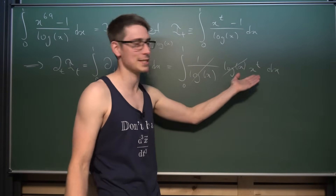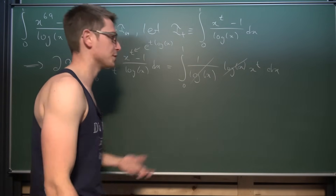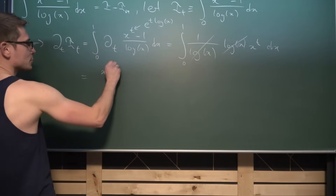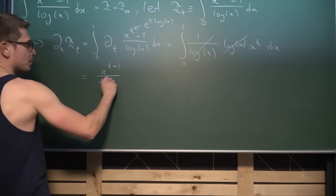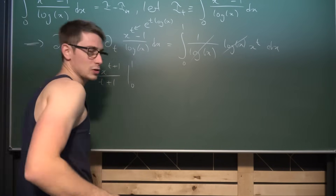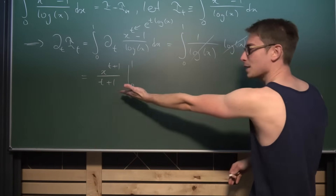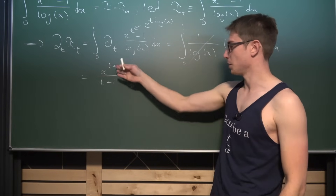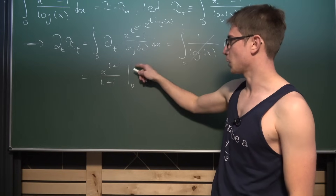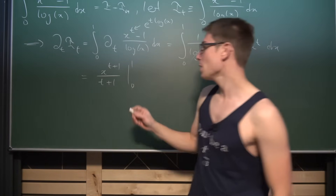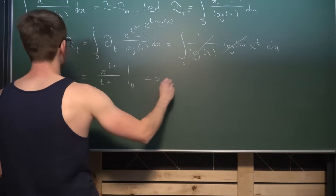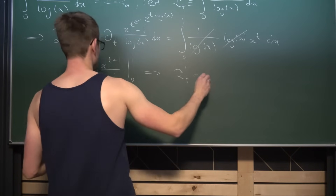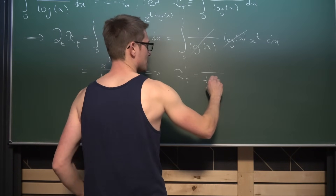Now we simply integrate x^t with respect to x — it's just a polynomial of degree t. This gives x^(t+1) / (t+1), evaluated from 0 to 1. Plugging in 0 gives zero; plugging in 1 gives 1/(t+1). So i'(t) = 1/(t+1).